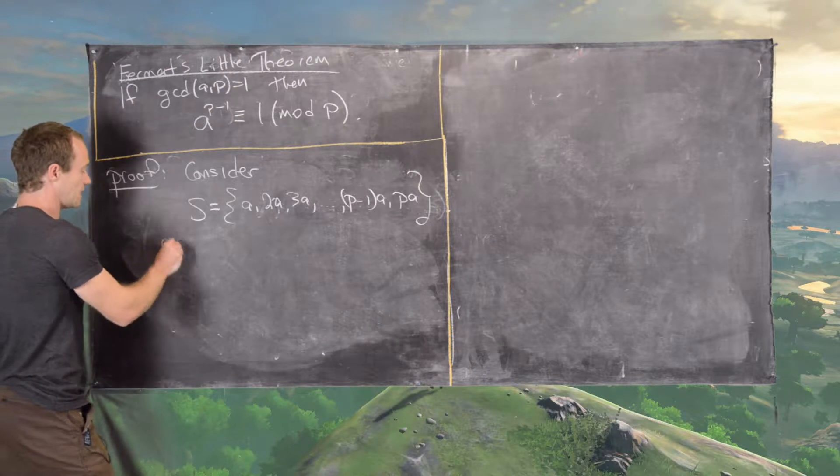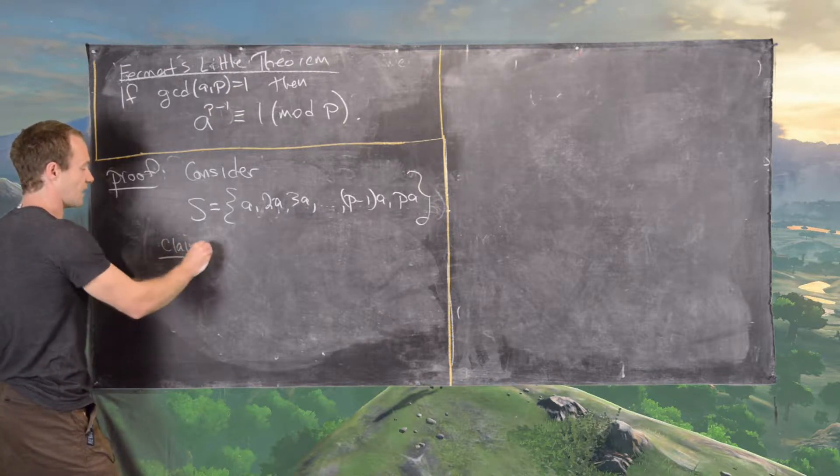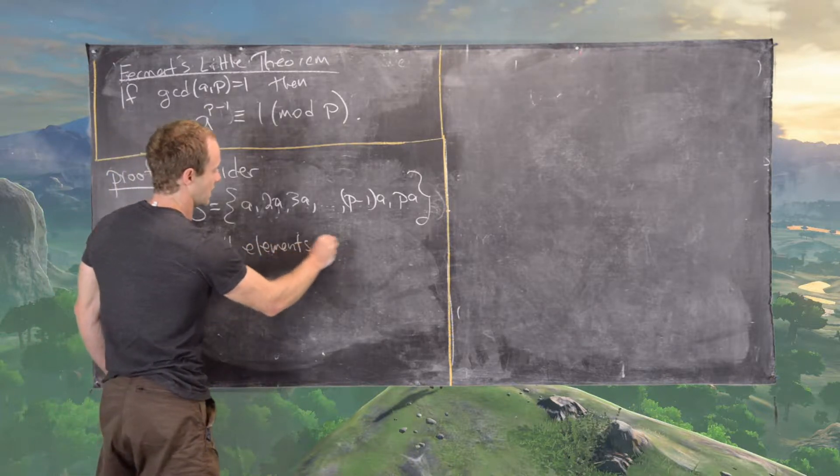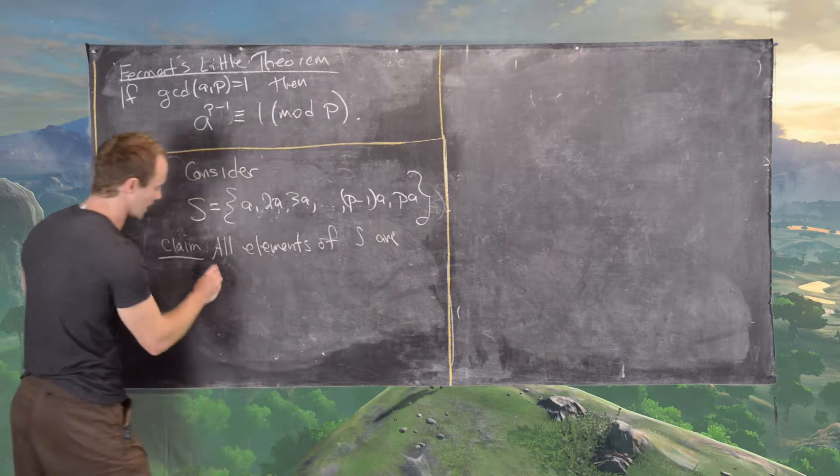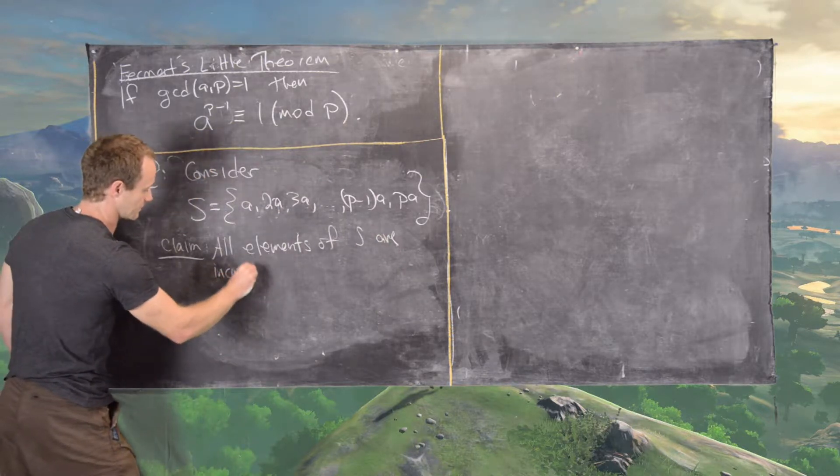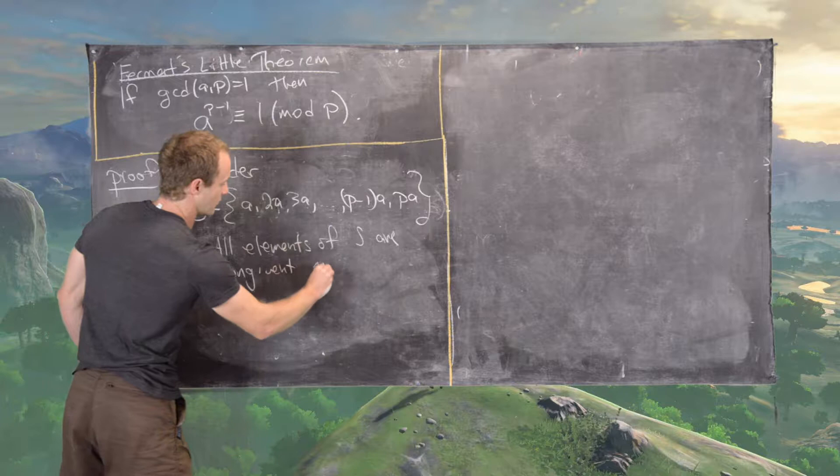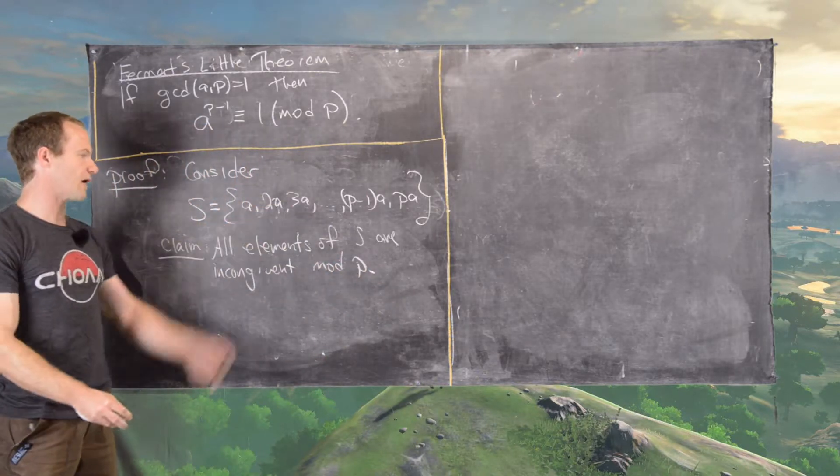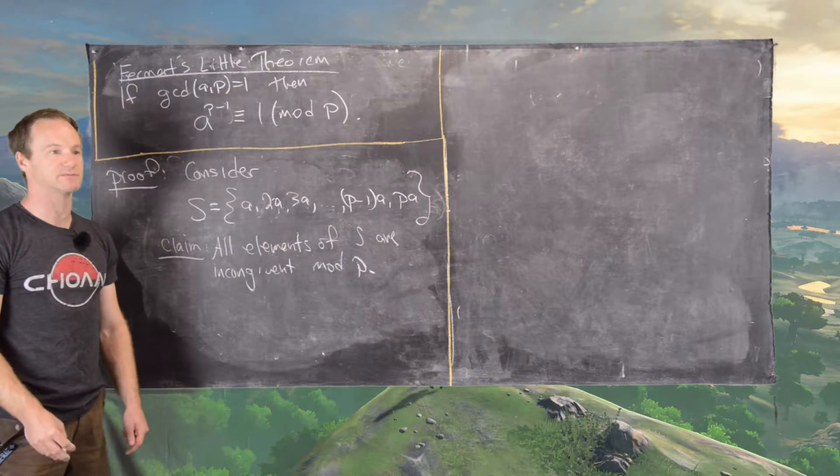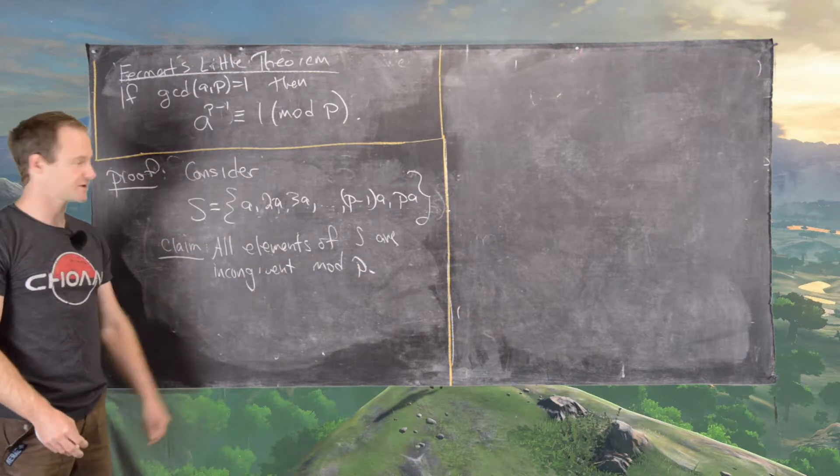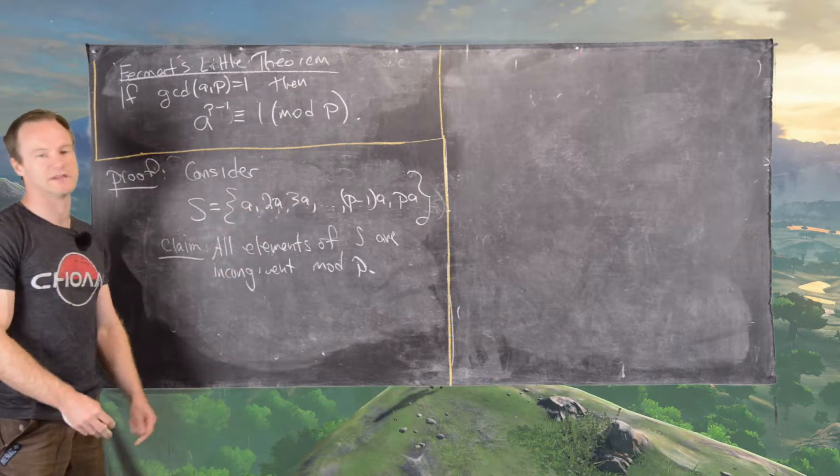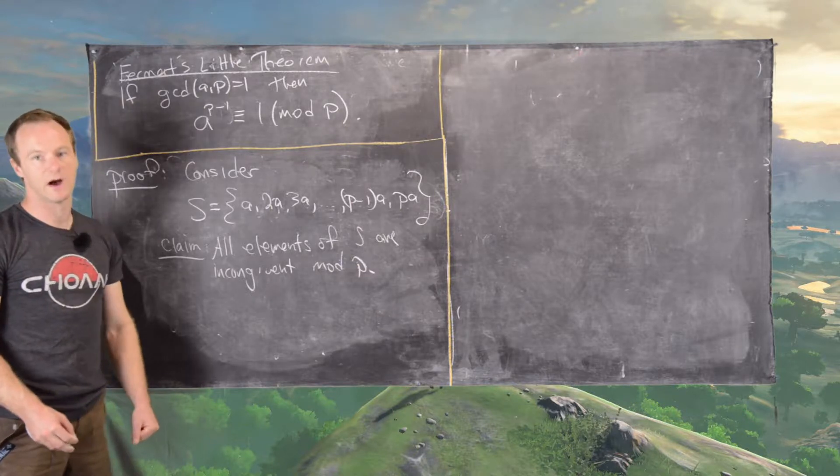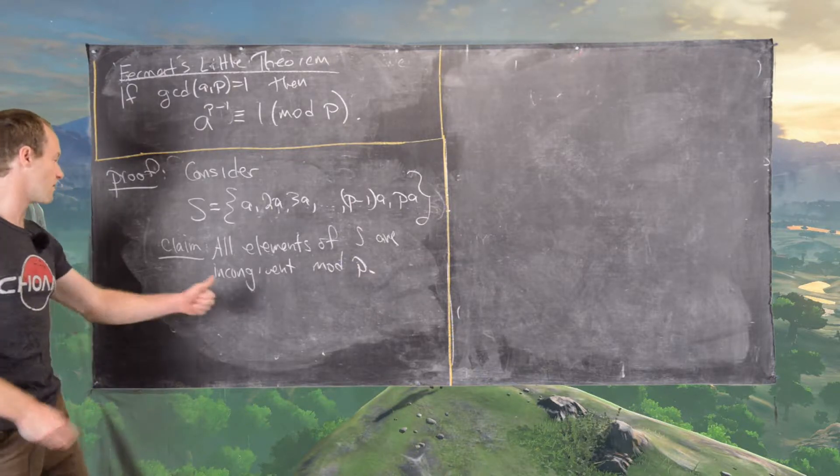And now here we want to claim that all elements of S are incongruent modulo P. So in other words, if you take the residue of all of these elements mod P, you get different numbers, and since there are P of them, that means you would get the residues 0, 1, 2, up to P minus 1.